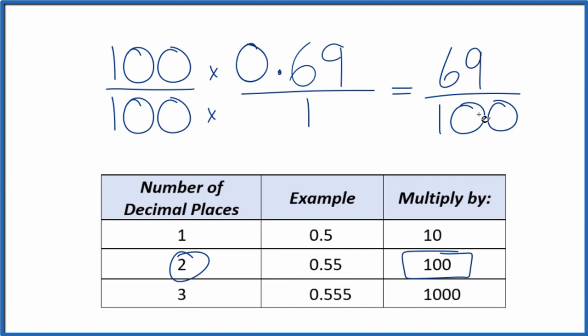If you divide 69 by 100, you get 0.69. This is Dr. B. Thanks for watching.